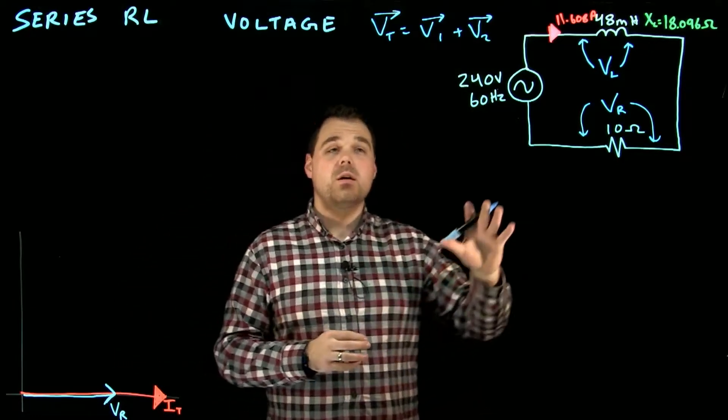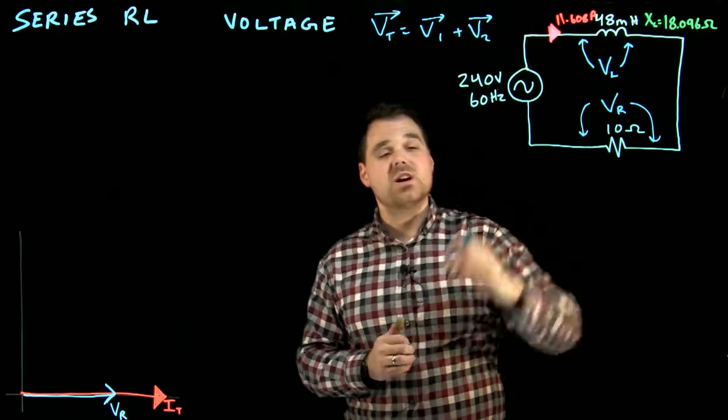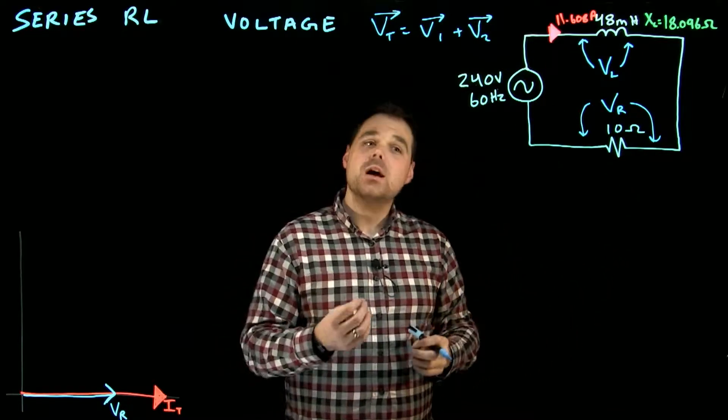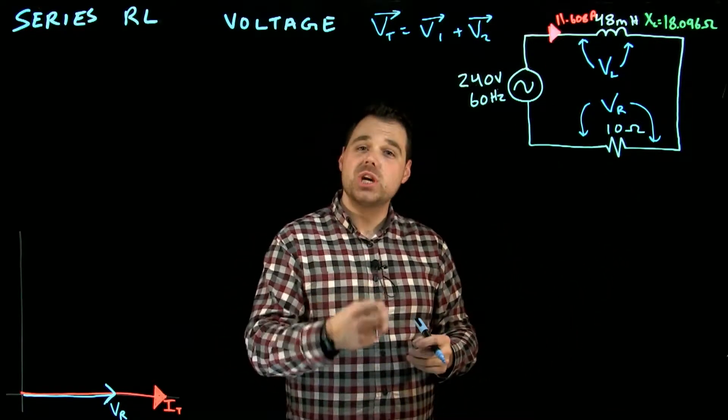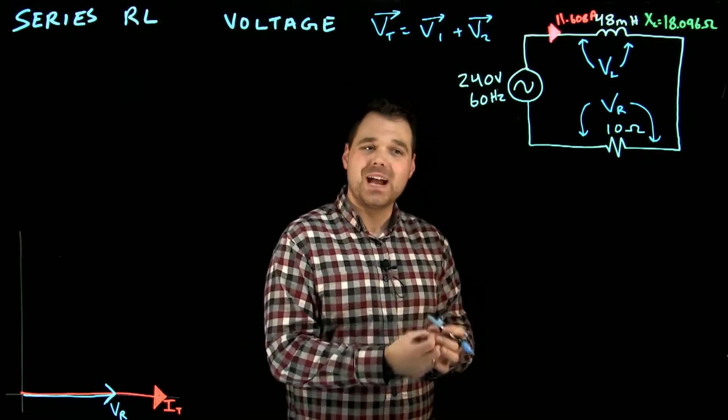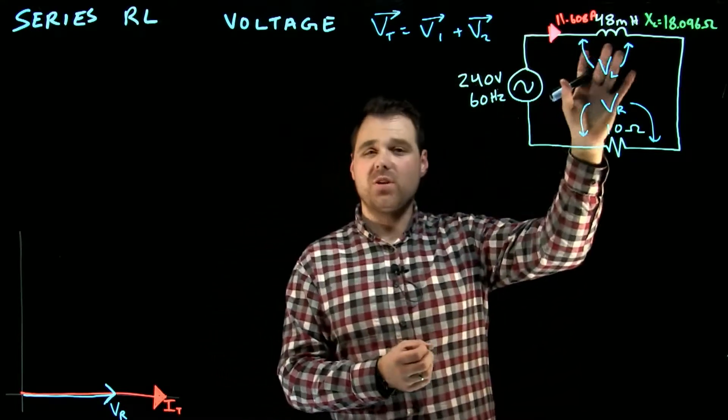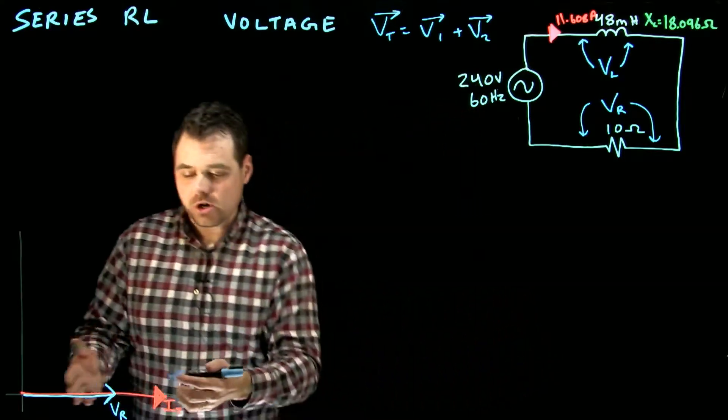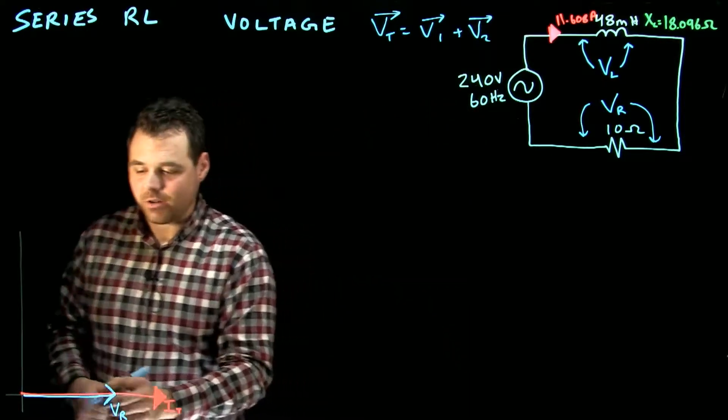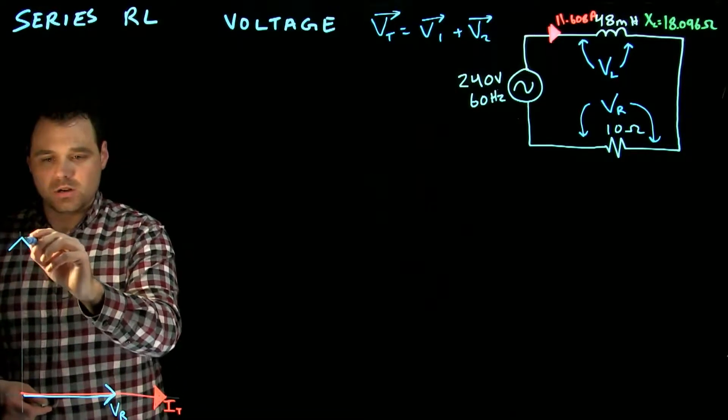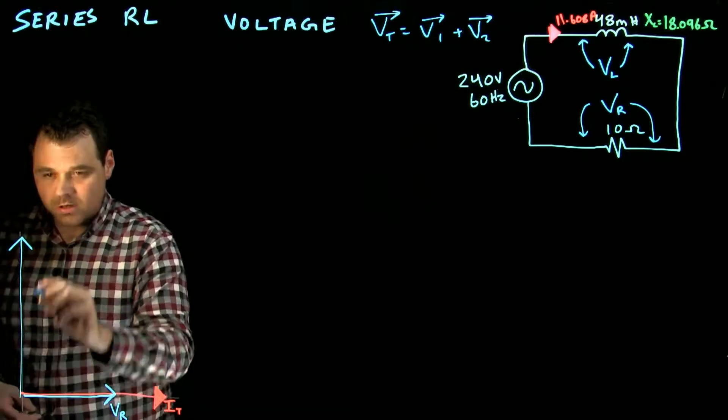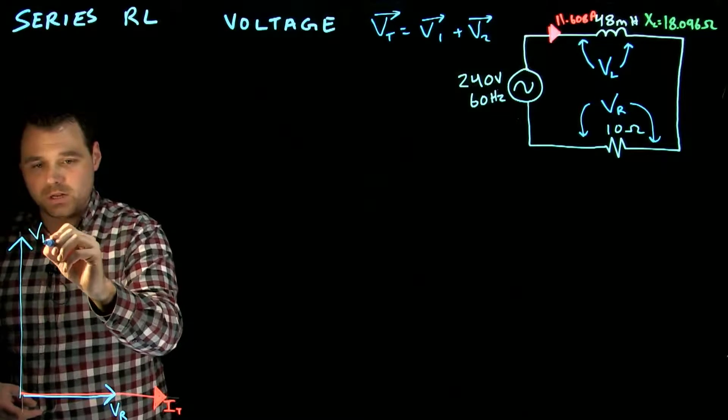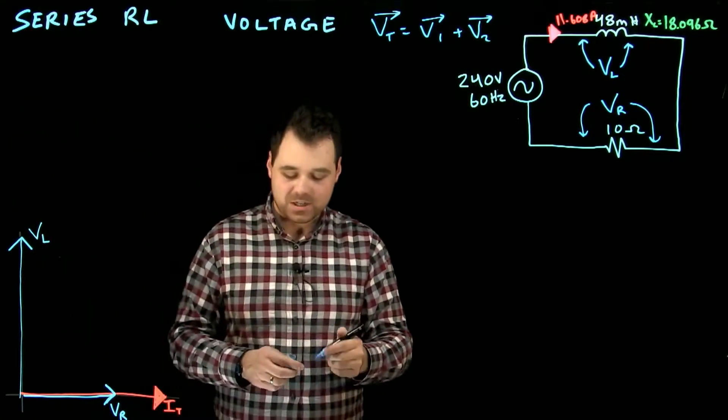Now what we need to think about is the voltage across our inductor. Because our inductance opposes a change in current, we cause the current to lag. When we're dealing with a pure inductor like this, we see it as a 90 degree lag. So if our current is lagging over here by 90 degrees, I'm actually going to see the voltage across that inductor be right up here, right at 90 degrees.